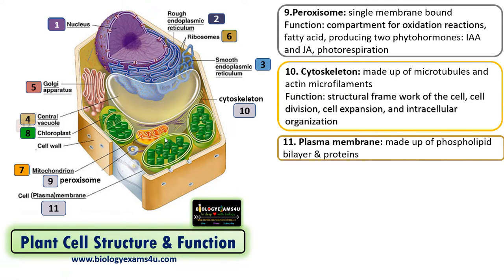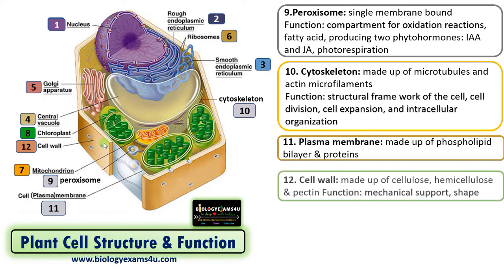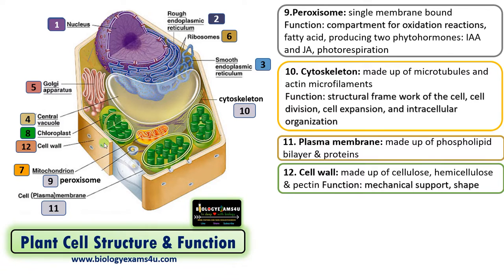The final structure is the cell wall. In plants, the cell wall is made up of cellulose, hemicellulose, and pectin. Its function is mechanical support, and it also provides shape to the cell.